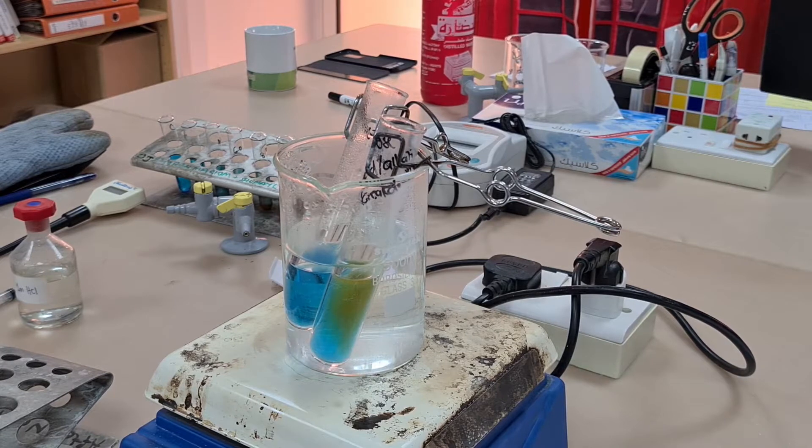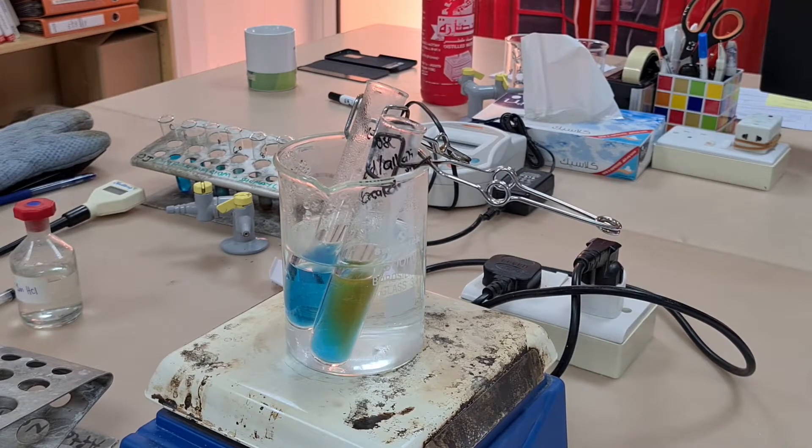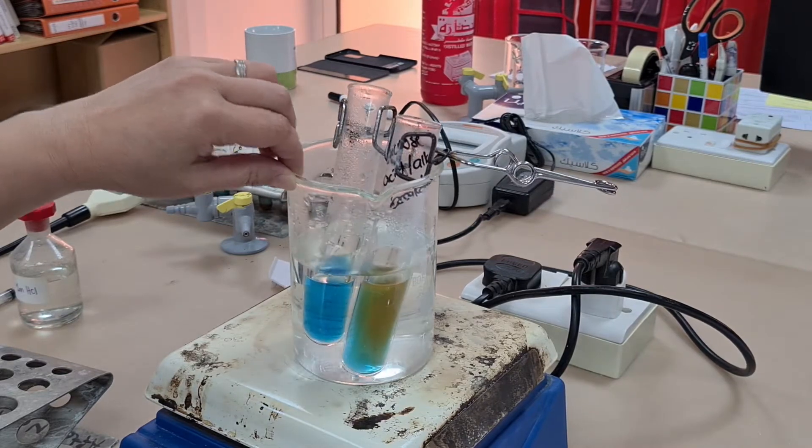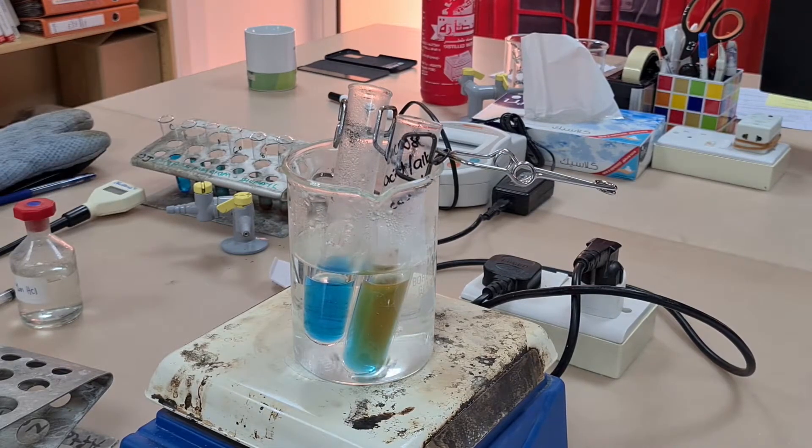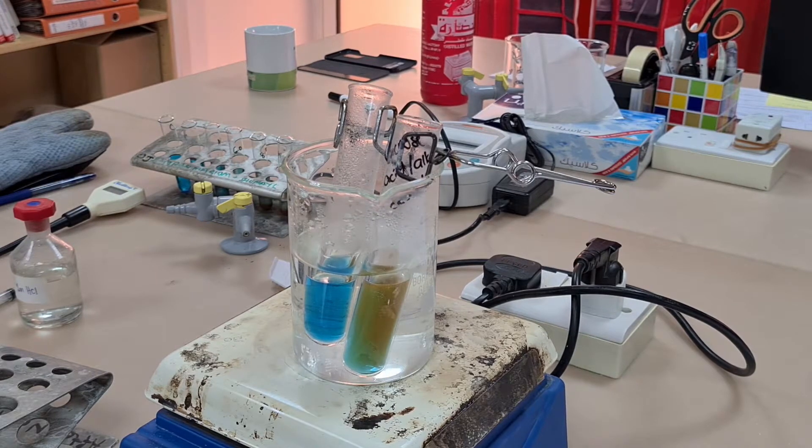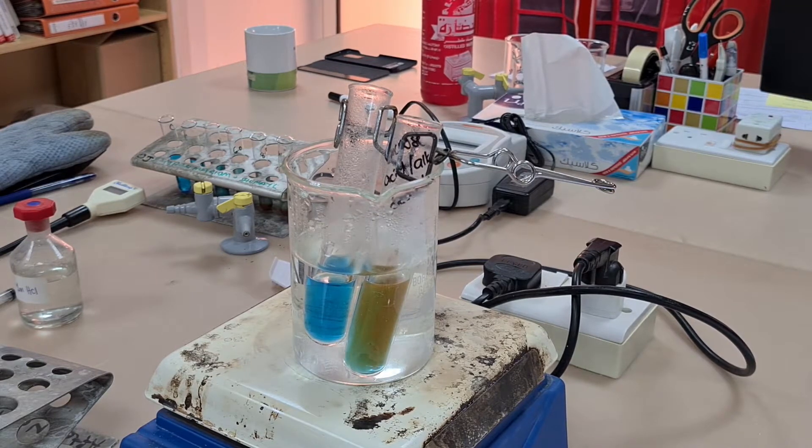A couple of minutes into the experiment and you can see already that we're starting to have a color change. Remember, this is qualitative Benedict's reagent. It tells you whether the solution contains reducing sugars or not.